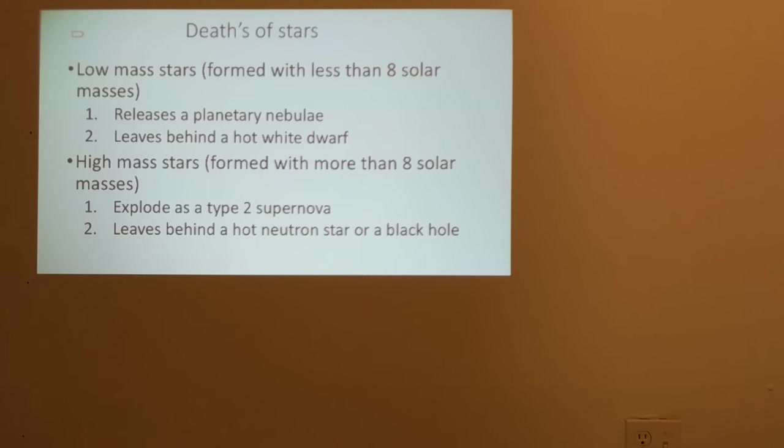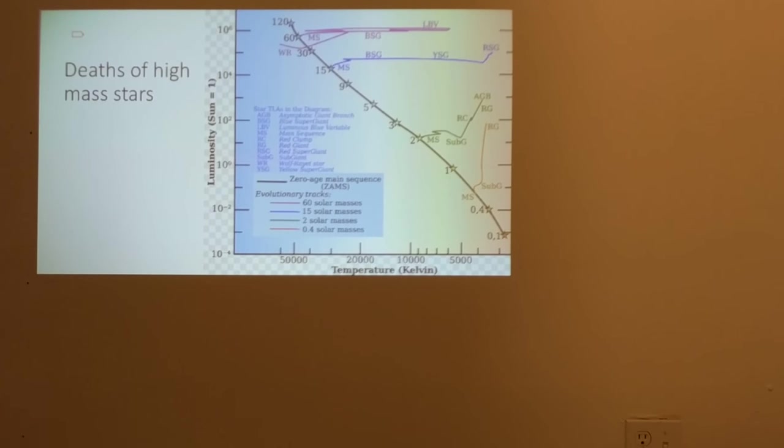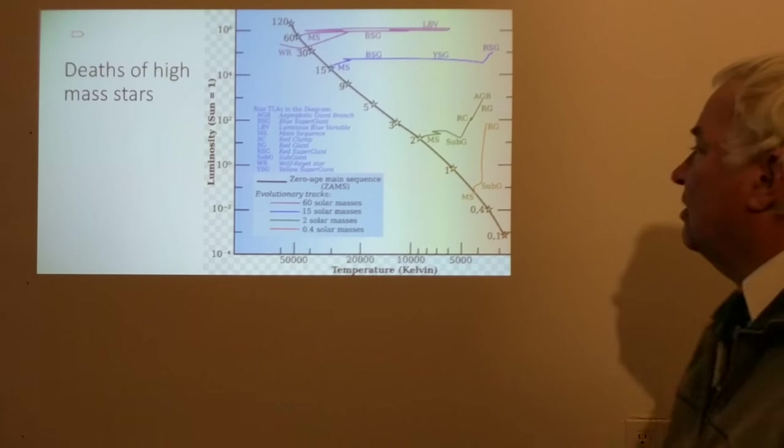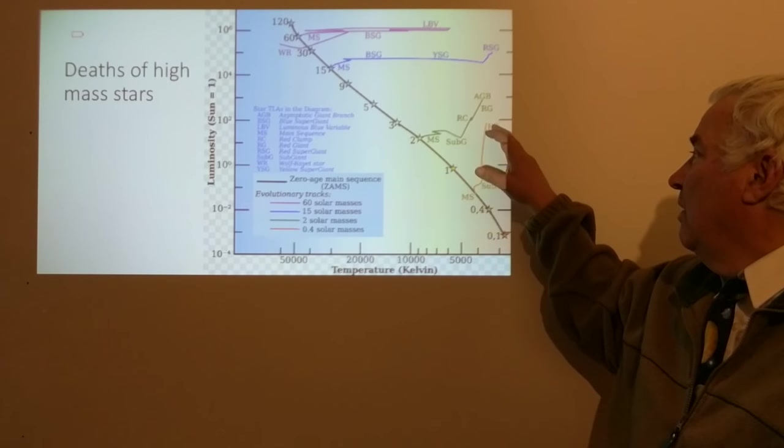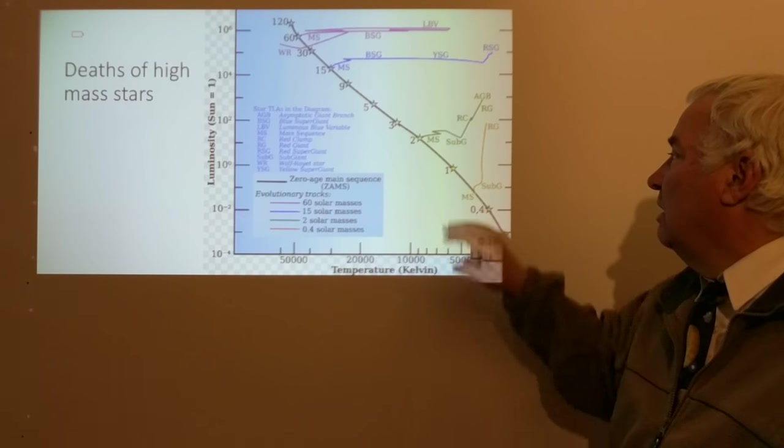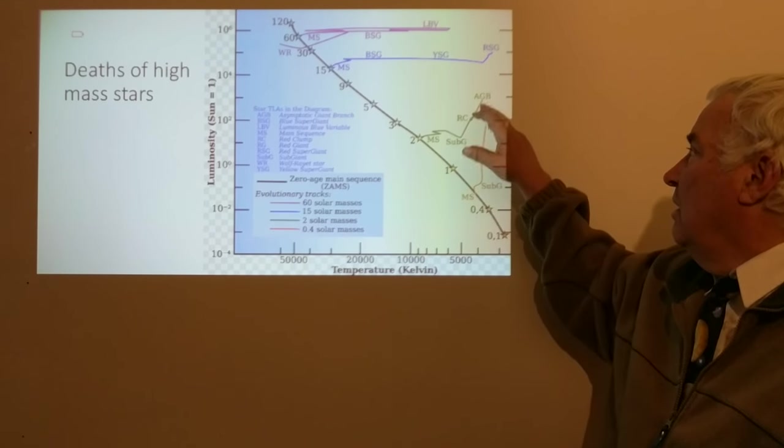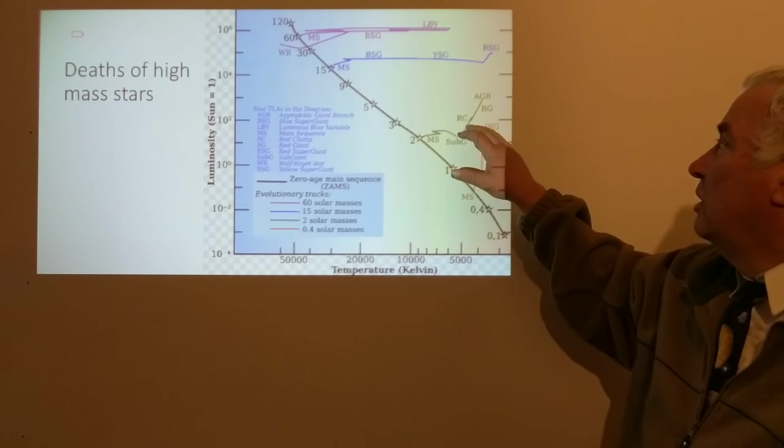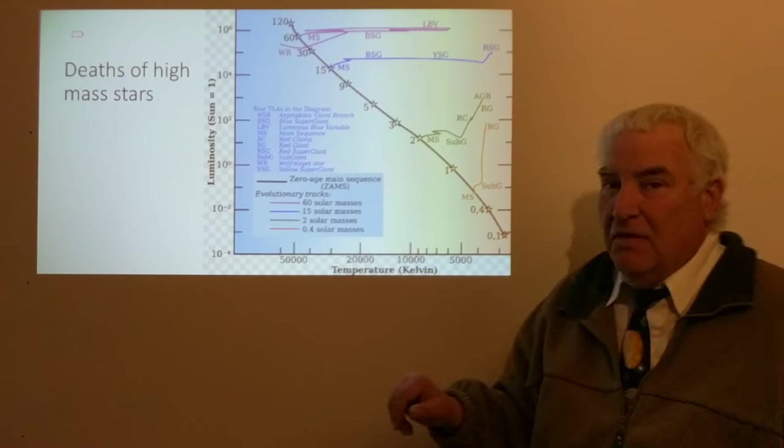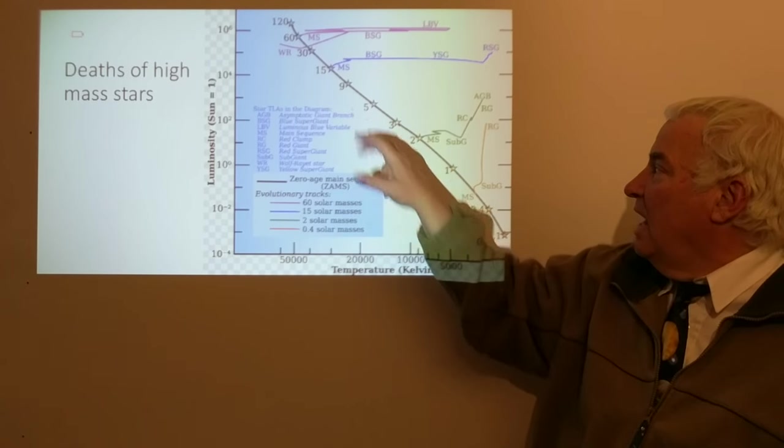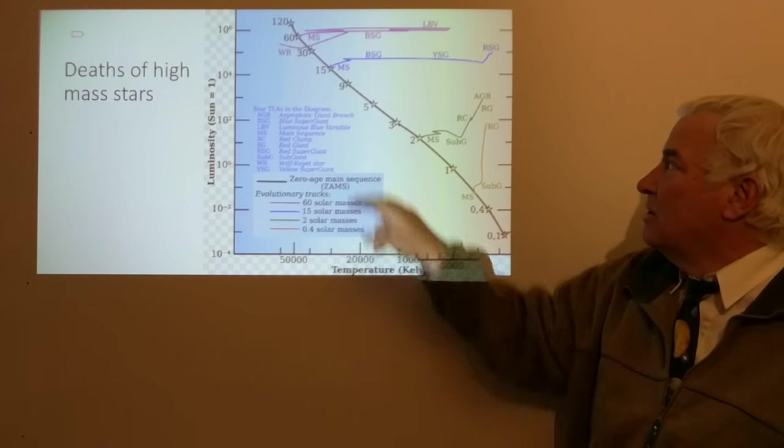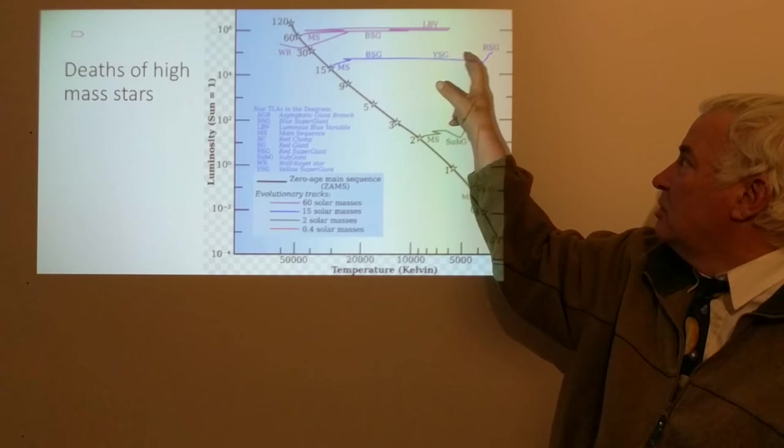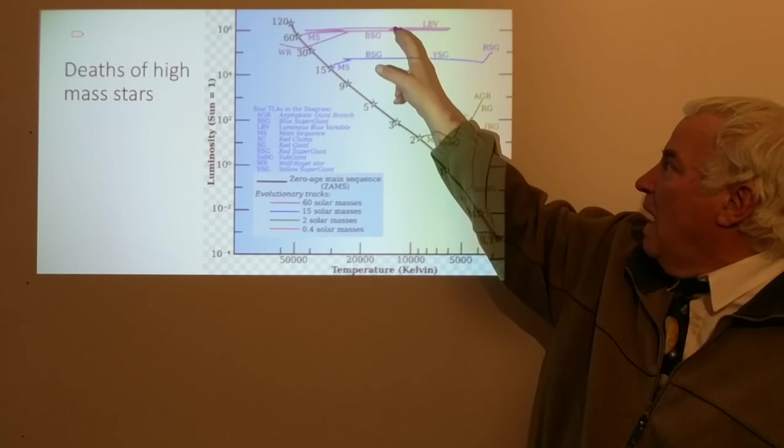High-mass stars can be seen on the HR diagram along with low-mass stars. Here we have a star with the Sun's mass that moves up the red giant branch. A two solar-mass star has a red giant and asymptotic giant branch. The ones we're discussing here are higher than eight solar masses. They begin as blue main sequence stars and become blue supergiants, yellow supergiants, and red supergiants, and can move back and forth here.